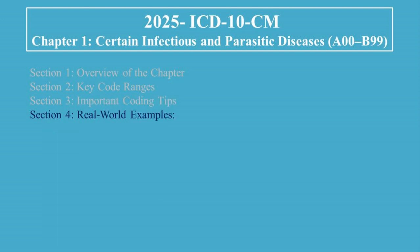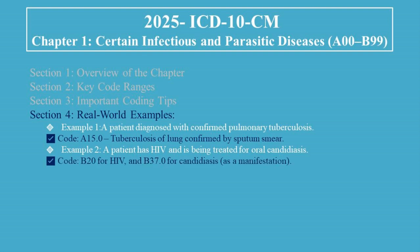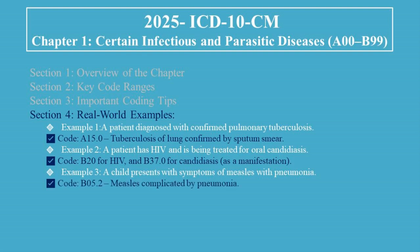Section 4: Real-World Examples. Example 1: A patient diagnosed with confirmed pulmonary tuberculosis — code A15.0, tuberculosis of lung confirmed by sputum smear. Example 2: A patient has HIV and is being treated for oral candidiasis — code B20 for HIV and B37.0 for candidiasis as a manifestation. Example 3: A child presents with symptoms of measles with pneumonia — code B05.2, measles complicated by pneumonia.